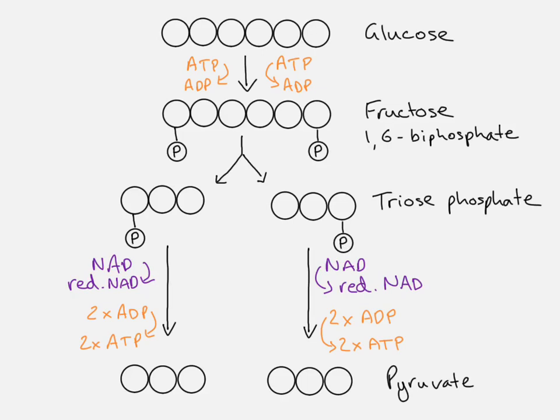So that's the end of glycolysis. So our reduced NADs, so we have two molecules of reduced NAD, they can move over to the electron transport chain. And we end up with a net gain, an overall gain, of two ATP molecules. That's because we have two here and two here, that's four, but we had to use two at the beginning. So overall, we have a net gain from glycolysis of two ATP molecules.